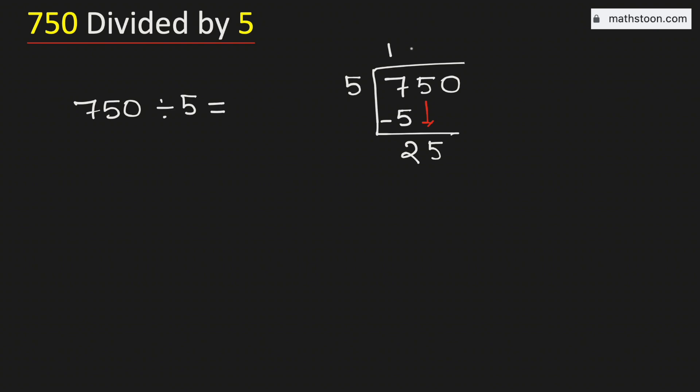Now we know that 5 times 5 is 25. Subtract, we get 0.